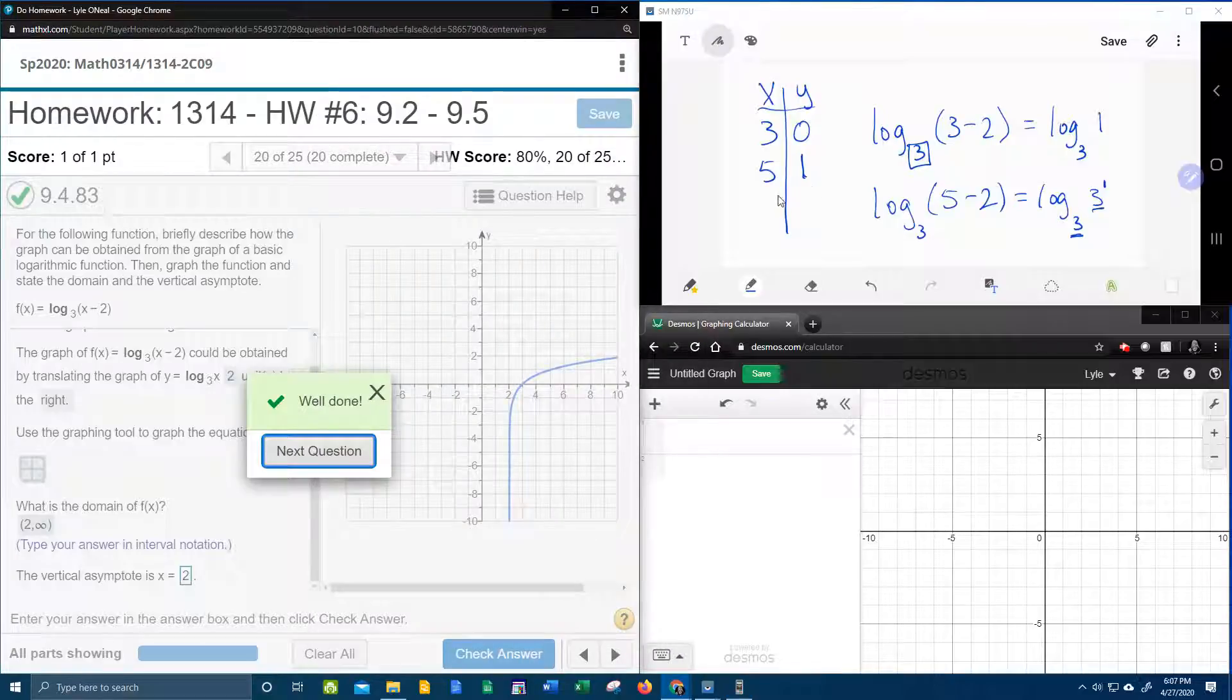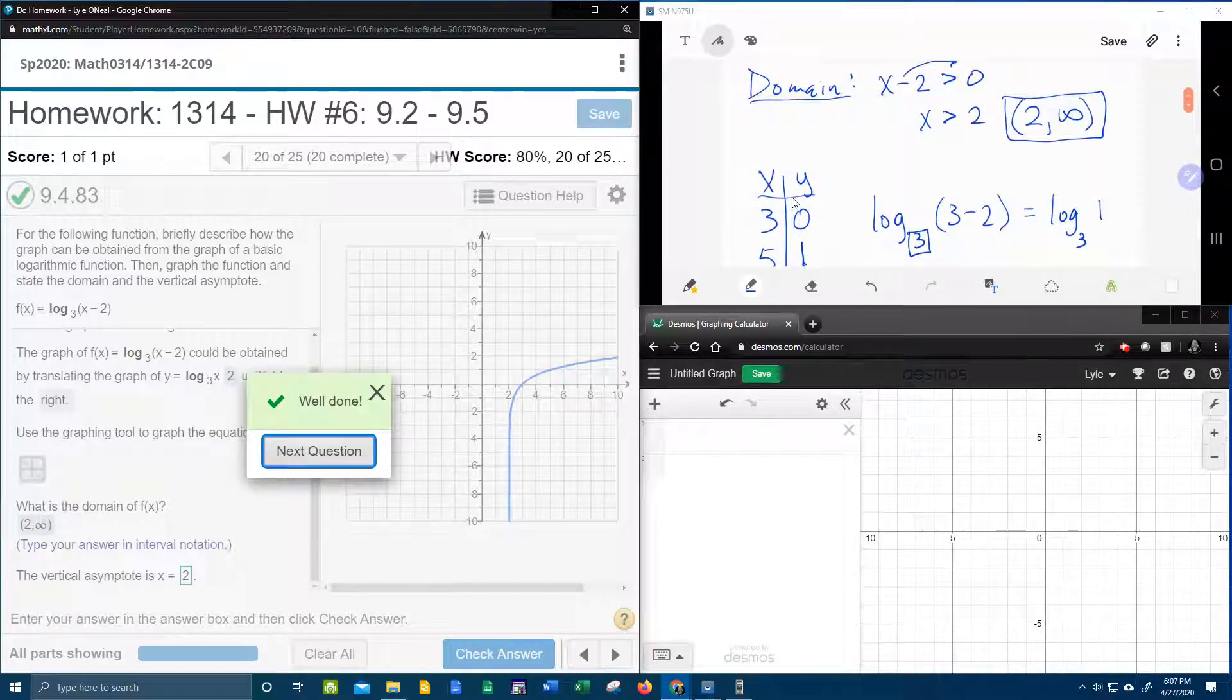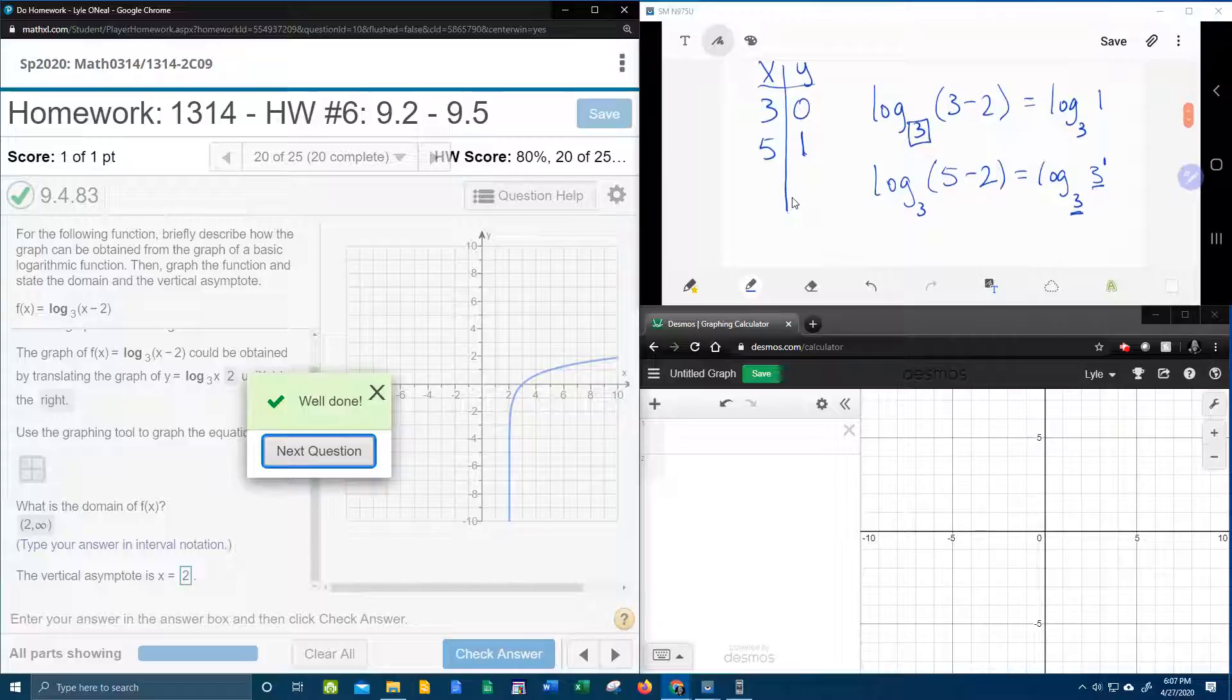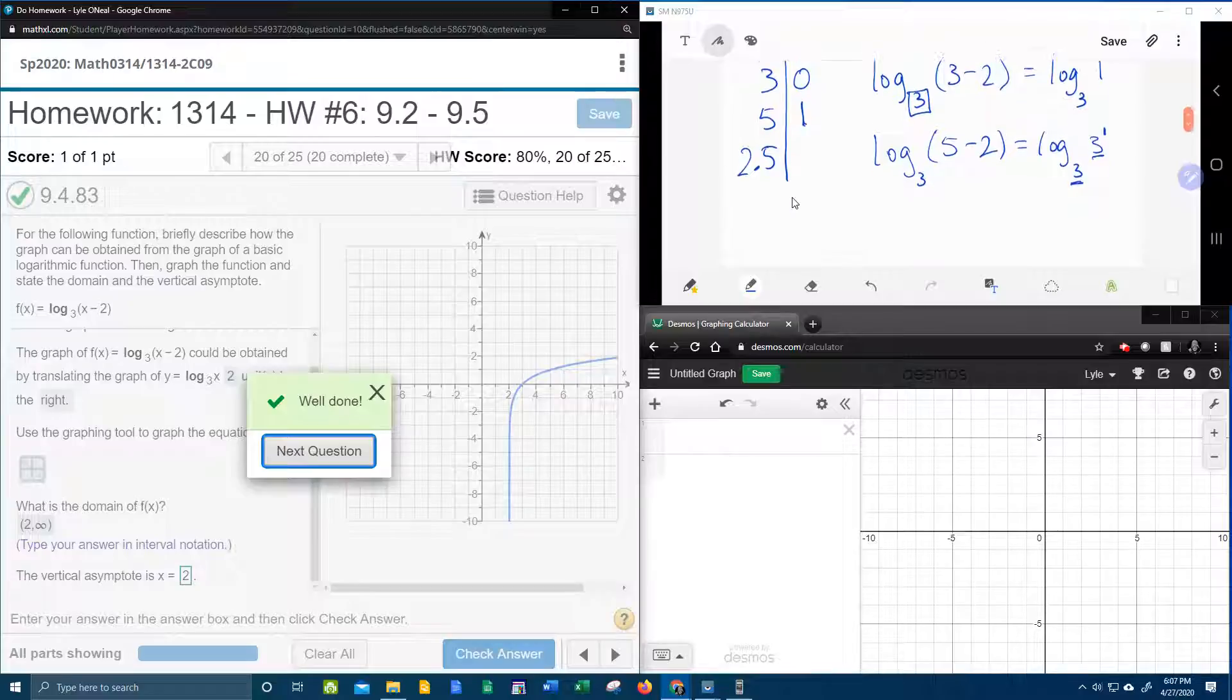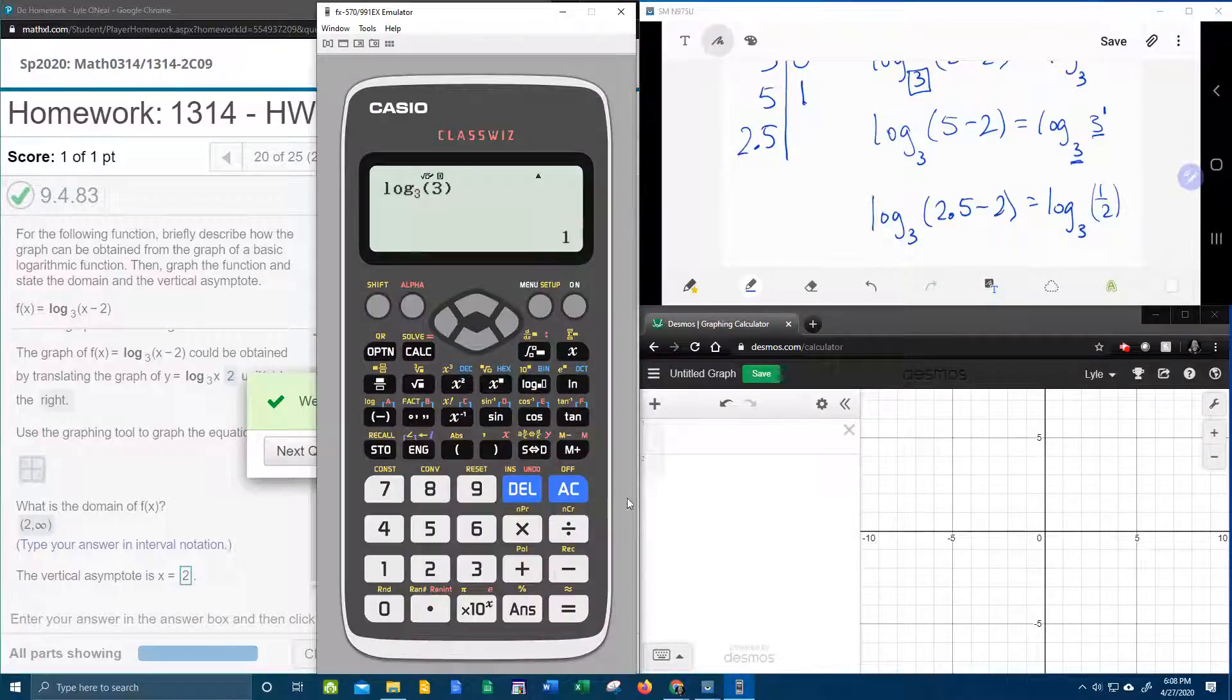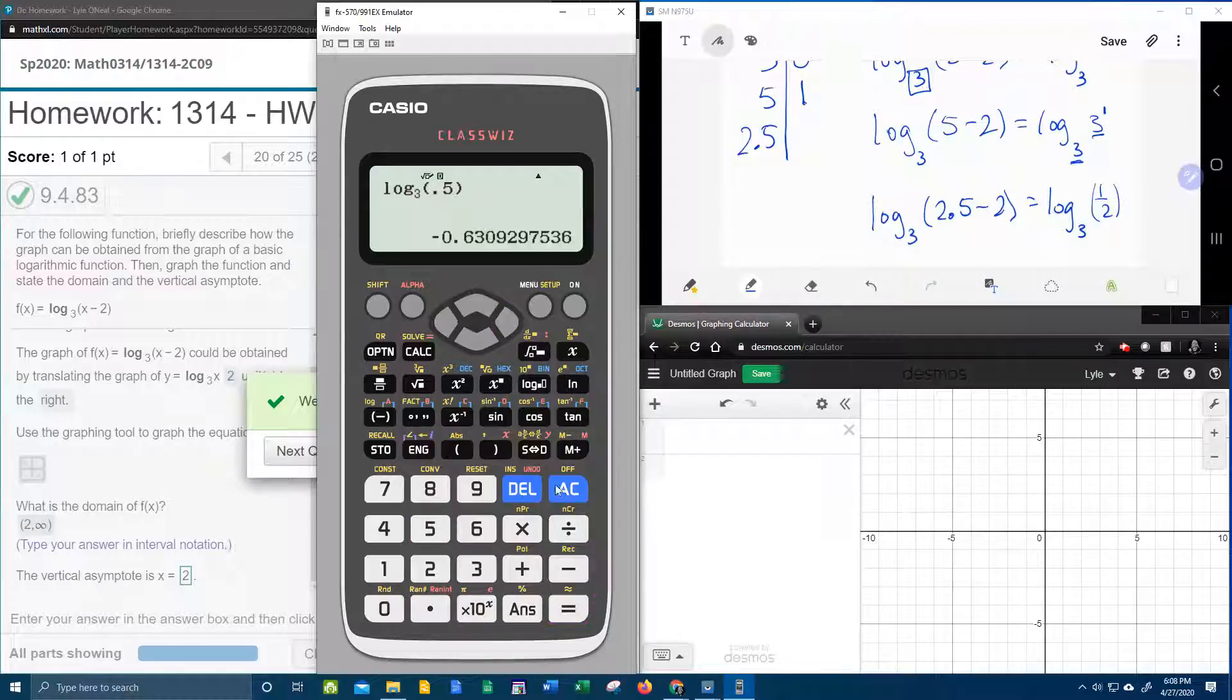Next, we need a third point, and I would really like to get a number that's closer to 2. And again, I want this to work out if I can get it to work out. So what's a number that's between 2 and 3? I don't know, 2.5 maybe? 2.5 is between 2 and 3. Let's do log base 3 of 2.5 minus 2. That's going to be the same as log base 3 of a half. And then I'm going to use my handy dandy calculator for that. Log base 3 of 0.5, which is the same as a half. That is not nice. I'm going to round that to negative 0.6.